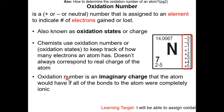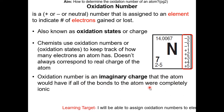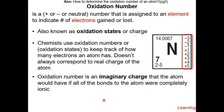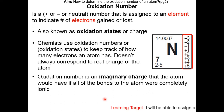Therefore, the oxidation number is an imaginary charge that the atom would have if all the bonds to the atom were completely ionic. So when we're trying to figure out the oxidation number of each atom in a compound, we have to pretend that there are only ionic bonds and that each atom either gained or lost electrons.